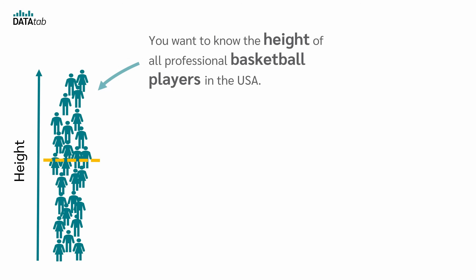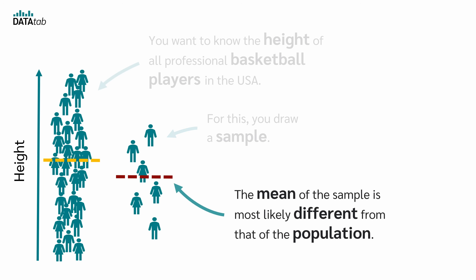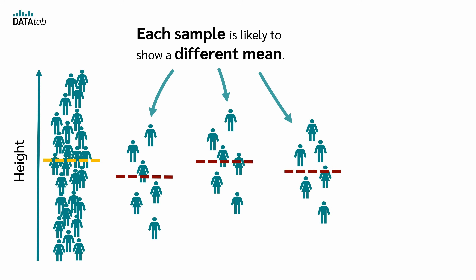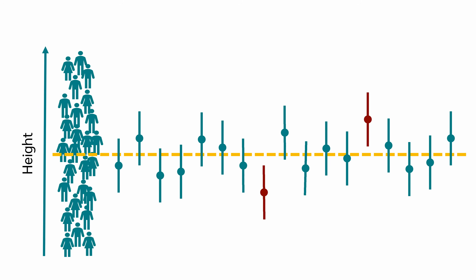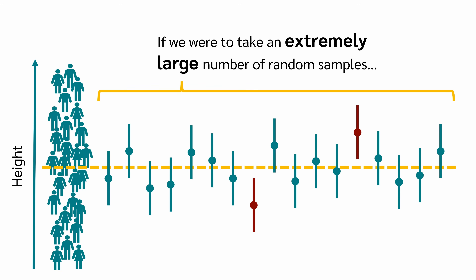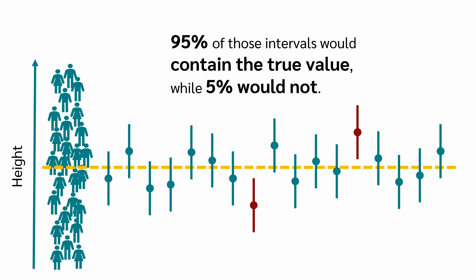Here is a simple example. You want to know the height of all professional basketball players in the US, so you draw a sample. The sample mean is most likely different from the population mean. If we draw several samples, each is likely to show a different mean. If we took a large number of random samples and calculated the mean and confidence interval of each, 95% of those intervals would contain the true value, while 5% would not.